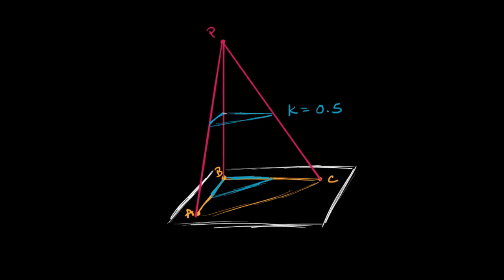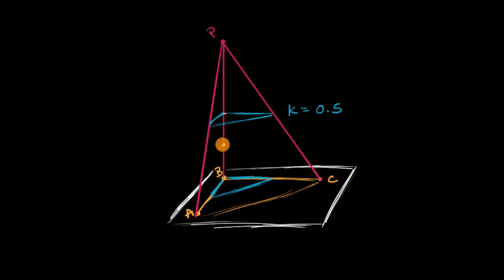What if we were to go 0.75 of the way between P and B? So if we were to go right over here — it's closer to our original triangle, closer to our surface. The cross-section would look like this.